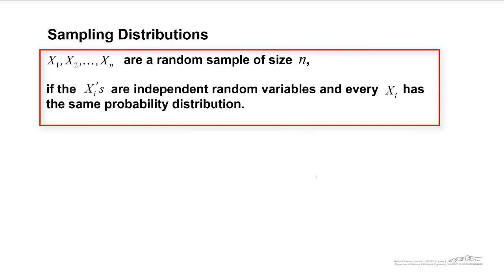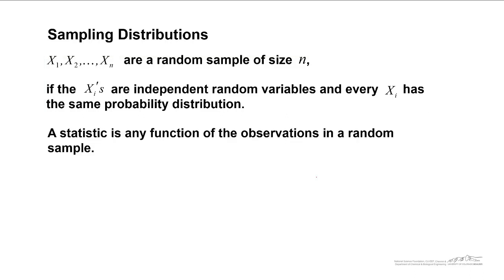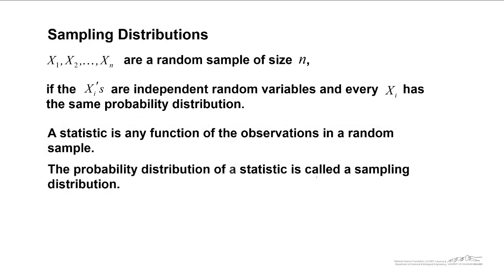x1, x2, through xn are a random sample of size n if the xi's are independent random variables and every xi has the same probability distribution. A statistic is any function of the observations in a random sample. The probability distribution of a statistic is called a sampling distribution.